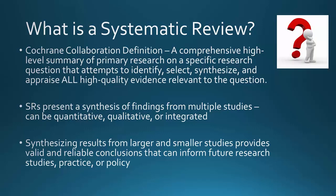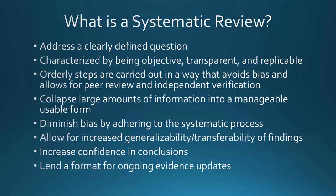We're going to address a clearly defined question. The characteristics of a very rigorous systematic review — there are three top characteristics: they are transparent, they are objective, and they are replicable. As you write your systematic review, when you describe how you conducted the literature search, that should be replicable by a reviewer at the journal or someone reading your paper. You're going to follow orderly steps that minimize bias in your inferences. You'll collapse a large amount of information so that readers can understand and apply it to clinical practice, policy, or teaching.